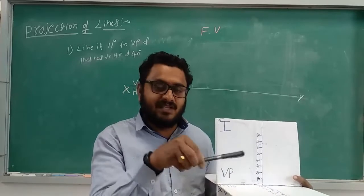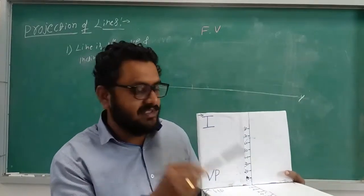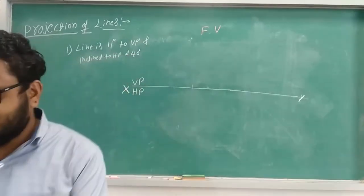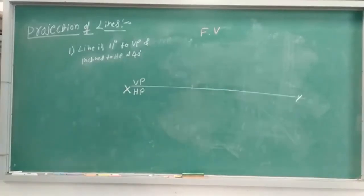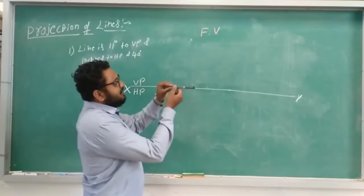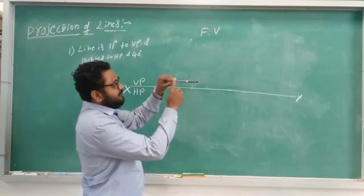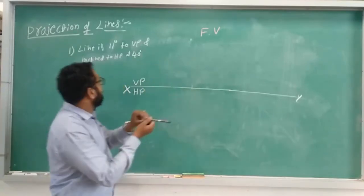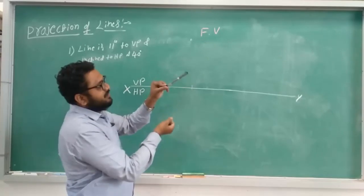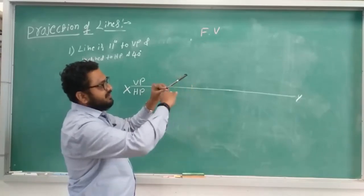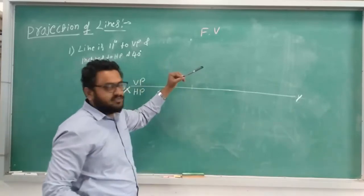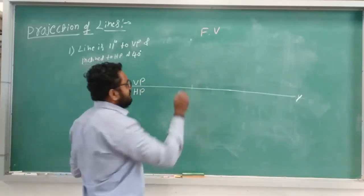So, the change in angle with respect to HP can be shown in VP. Next, let's take an example: the line is parallel to VP with an inclination of 40 degrees to HP. It remains parallel to the vertical plane and becomes 40 degrees to the horizontal plane. The true length will appear in the front view, and the angle can also be seen in the front view. That's why we start drawing from the front view.